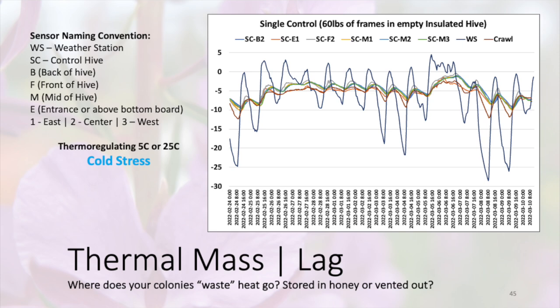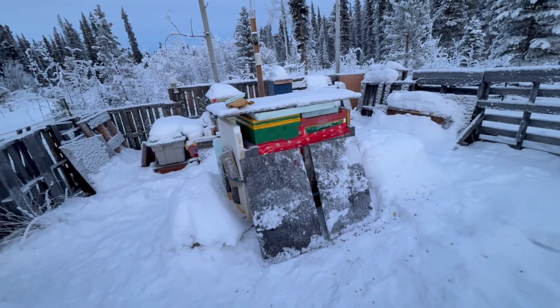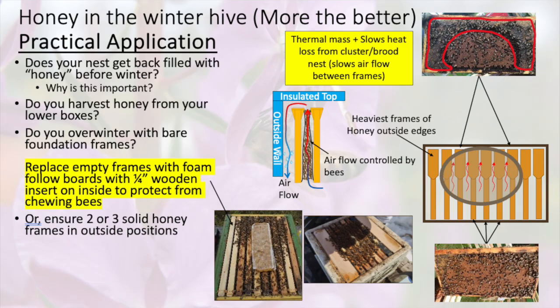Honey is also a decent insulator — not as good as polystyrene, but similar to wood. A fat honey frame about an inch and a half to two inches thick is roughly equivalent to two inches of wood, which is about R3 to R4. With bees around it, above and on the inside, it gives them a nice place to store extra heat and buffer crazy temperature differences.